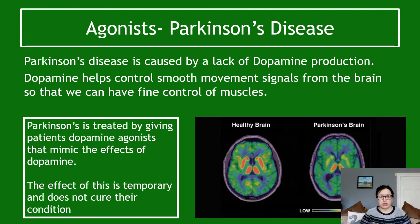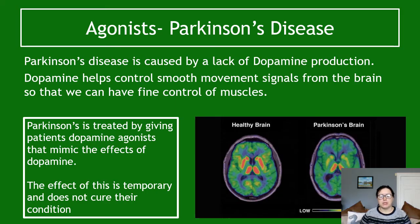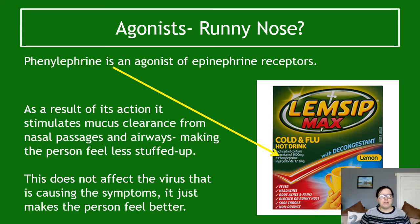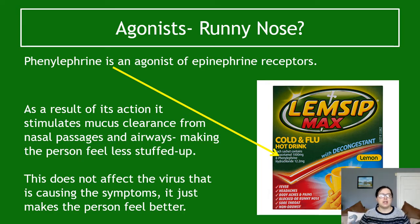An example of an agonist is in the treatment of Parkinson's disease, which is caused by a lack of dopamine production. Dopamine helps control smooth movement signals from the brain for fine muscle control, as well as the reward pathway. Parkinson's is treated by giving patients dopamine agonists — called L-dopa — which mimic the effect of dopamine, though the effect is temporary and doesn't cure the condition. Another example is phenylephrine, an agonist of epinephrine receptors that stimulates mucus clearance from nasal passages and airways, making you feel less stuffed up — it's the active ingredient in decongestants.